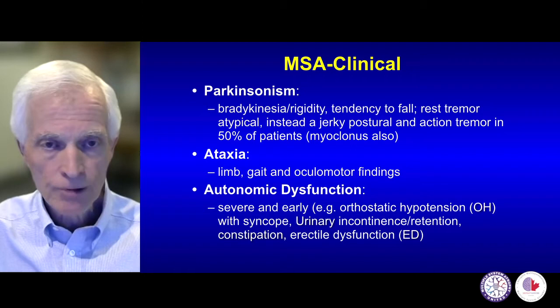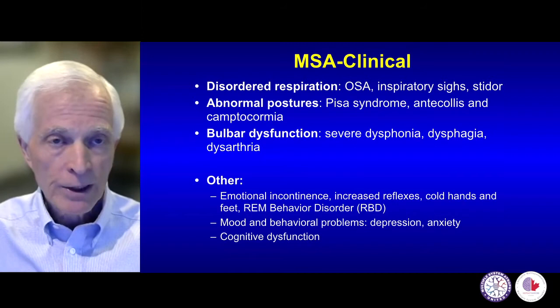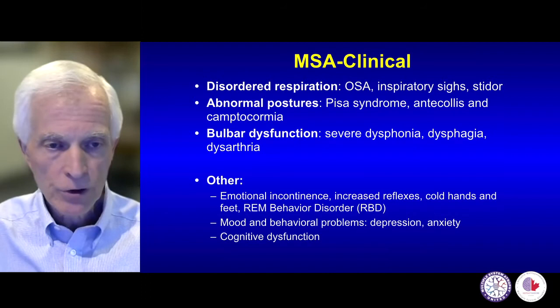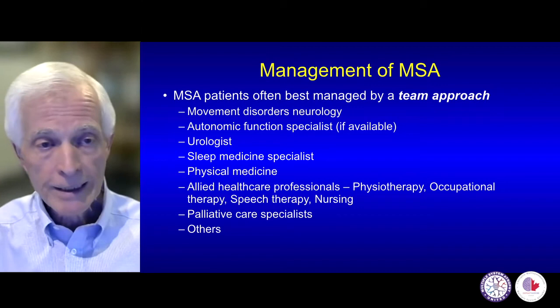In addition to those predominant features, we also have problems with respiration, problems with posture of the trunk muscles, bulbar dysfunction meaning difficulties with speech and swallowing, and a variety of other features such as rapid eye movement behavior disorder, emotional incontinence, mood and behavior, etc. You can see quite a large number of problems that we need to think about treating.